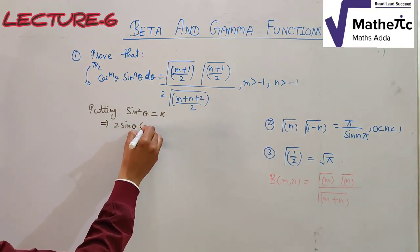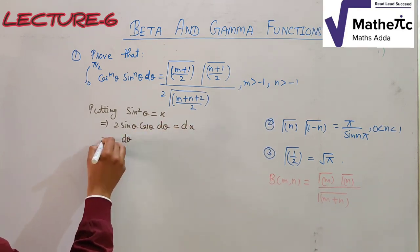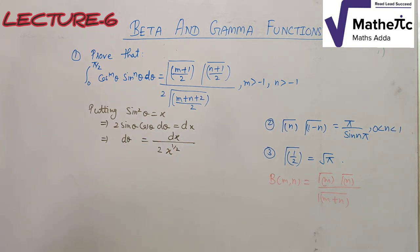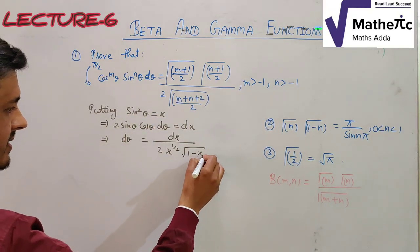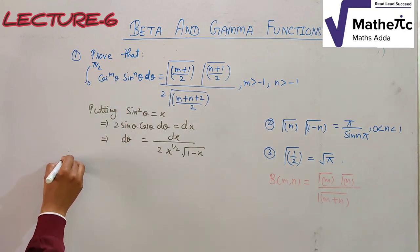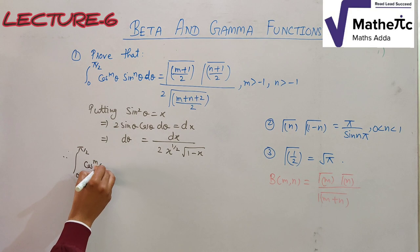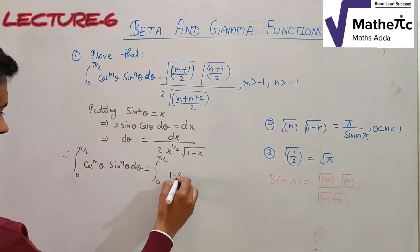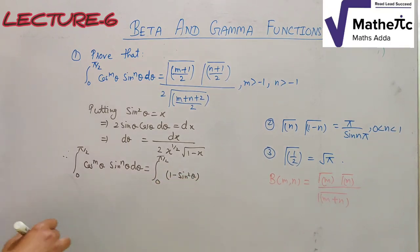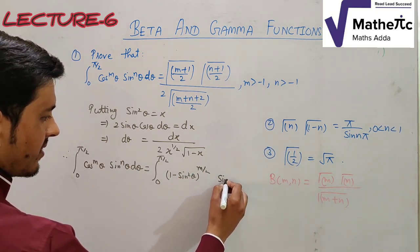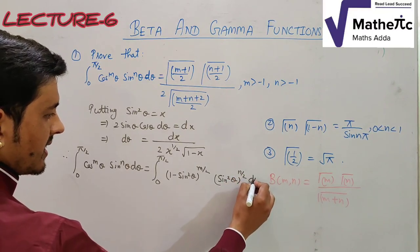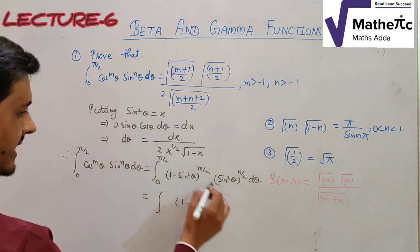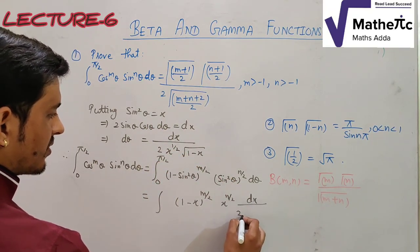To evaluate ∫₀^(π/2) cosᵐθ · sinⁿθ dθ, we use the substitution x = sin²θ, so dx = 2 sinθ cosθ dθ. Then cosθ = √(1 − sin²θ) = √(1 − x). Substituting, cosᵐθ becomes (1 − x)^(m/2) and sinⁿθ becomes x^(n/2), with dθ = dx/(2x^(1/2)).